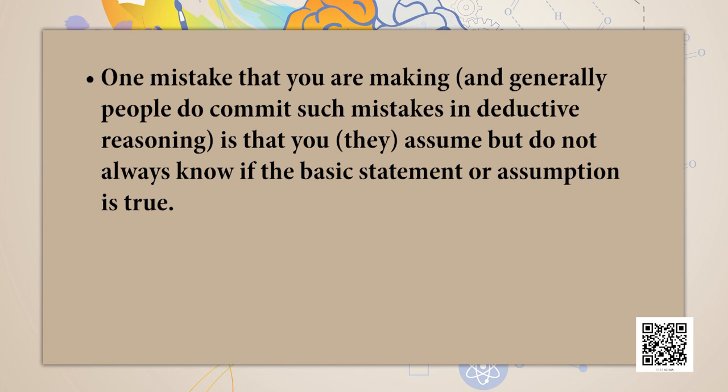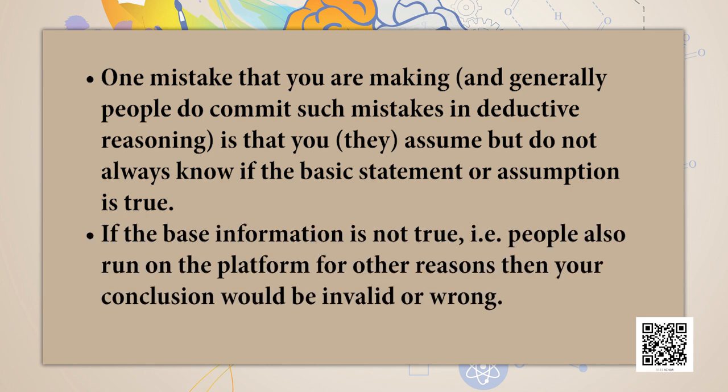The kind of reasoning that begins with an assumption is called deductive reasoning. Deductive reasoning begins with making a general assumption that you know or believe to be true and then drawing specific conclusions based on this assumption — it is reasoning from general to particular. Your general assumption: people run on the railway platform only when they are getting late for the train. The man is running on the platform; therefore, he is getting late for the train. One mistake people commonly make in deductive reasoning is that they assume but do not always know if the basic assumption is true — if people also run for other reasons, your conclusion would be invalid.